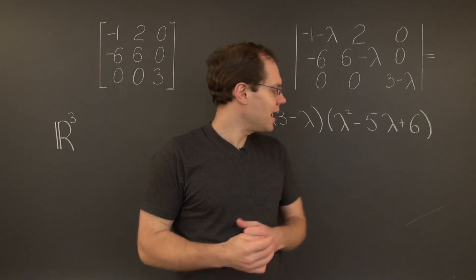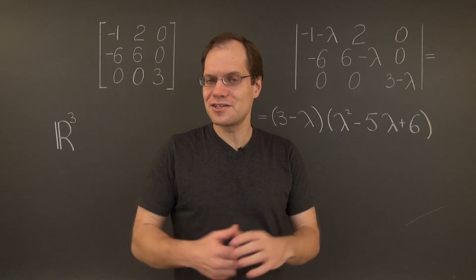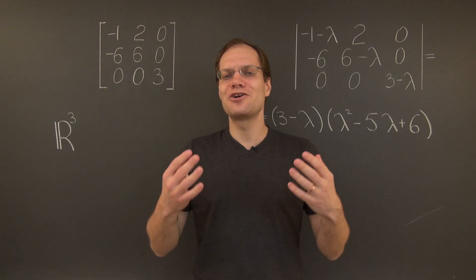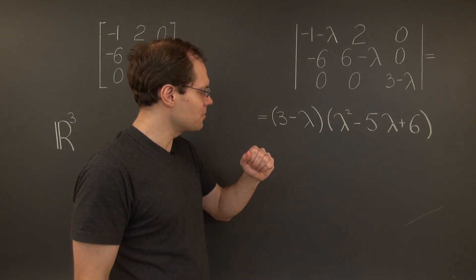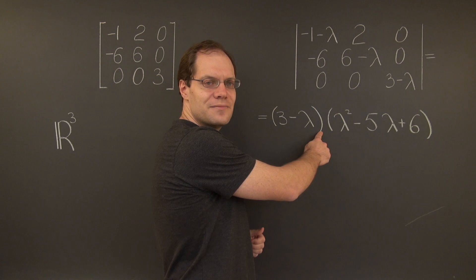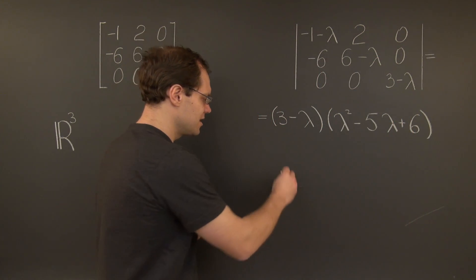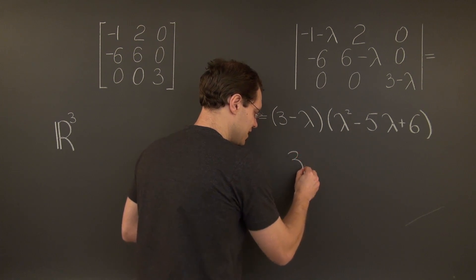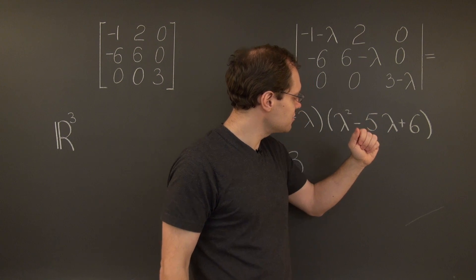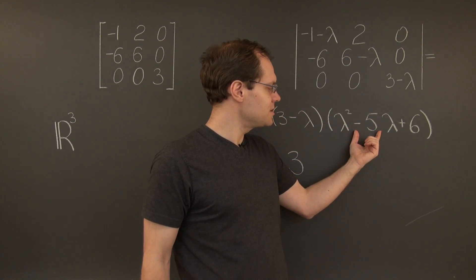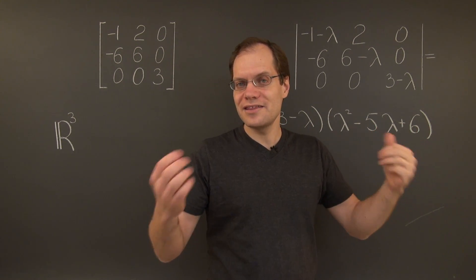Ordinarily, our instinct might be to multiply this expression out to see the characteristic polynomial. But our goal is to solve the characteristic polynomial, and it's much easier to do from this factored form. One of the roots will come from this factor right here, and the other two roots will come from this factor. So one of the roots is 3 — that's one eigenvalue. The other two roots come from this quadratic: we're looking for two numbers whose sum is 5 and product is 6, which is 2 and 3.